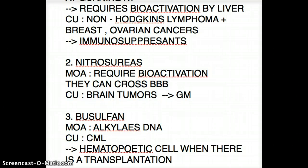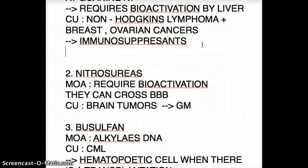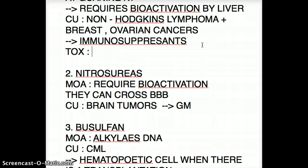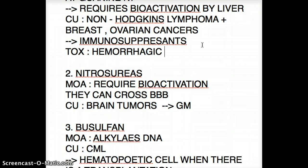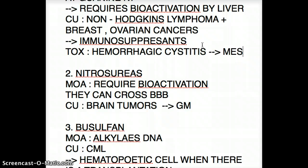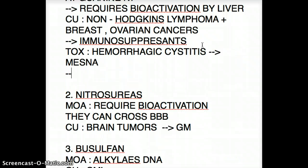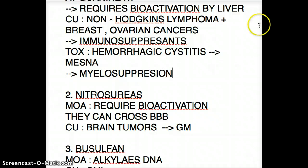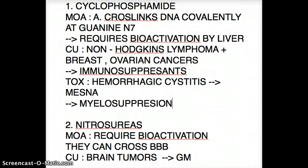Let's talk about toxicities of cyclophosphamide. The main toxicity we often hear about is that it causes hemorrhagic cystitis, but this can be prevented by another drug called mesna. There is another toxicity for this drug: myelosuppression.